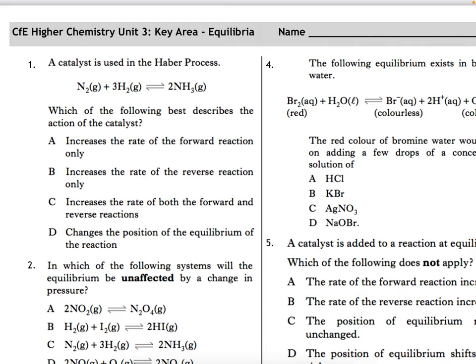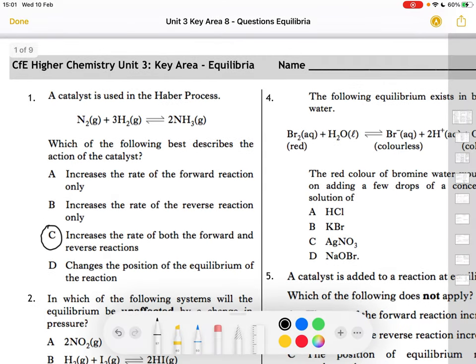We'll have a look at this first one here and it's telling you that a catalyst is used in the Haber process. Which of the following best describes the action of the catalyst? Well, without even looking at the answers we know that a catalyst does not change the position of equilibrium and actually increases the rate of both the forward and the reverse reactions. So that has to be C for that one.